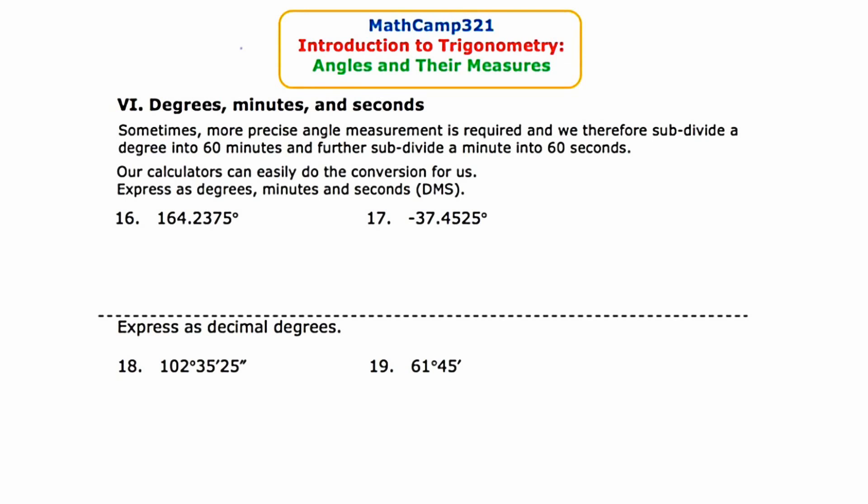Sometimes we need a more precise unit of measure than just a degree. So we subdivide each degree into smaller units called minutes, and there are 60 minutes in a degree. We can go even further and subdivide each of those degrees into yet smaller units called seconds, and there are 60 seconds in each minute.